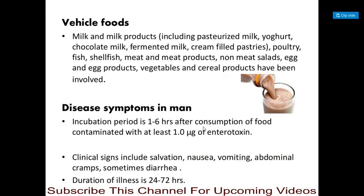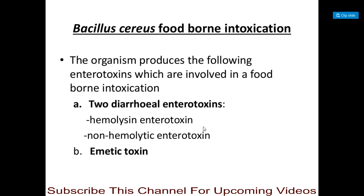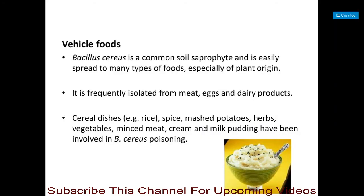The next food intoxication is Bacillus cereus foodborne intoxication. The organism produces different types of enterotoxins involved in foodborne intoxications. One toxin produced by Bacillus cereus is diarrheal enterotoxin, which includes hemolysin enterotoxin and non-hemolytic enterotoxin. The second toxin is the emetic toxin. Bacillus cereus is a common soil saprophyte, easily spread to different types of foods especially from plant origin, and it is frequently isolated from meat, eggs, and dairy products.